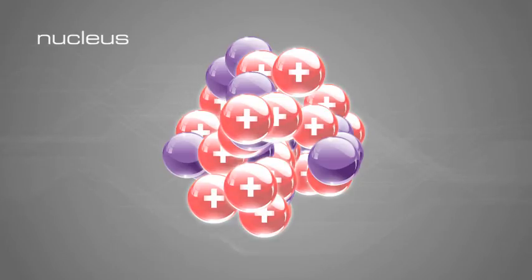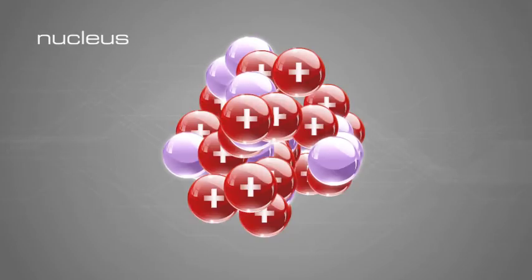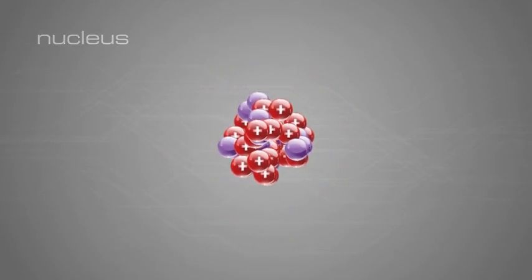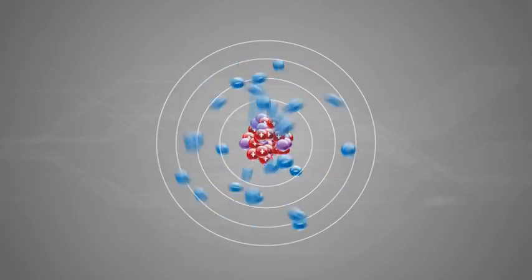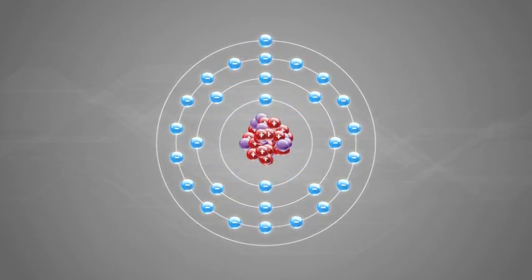The protons each carry a positive electrical charge. The neutrons are as heavy as the protons but carry no charge. This means that overall the nucleus is positively charged, and orbiting around it are negatively charged particles called electrons.